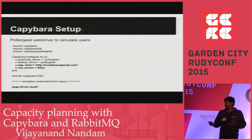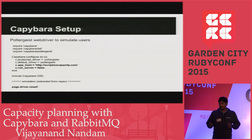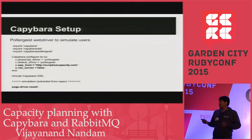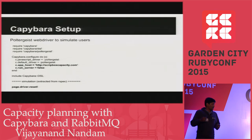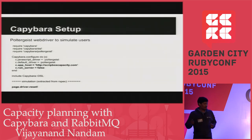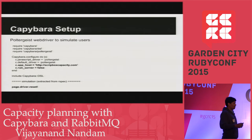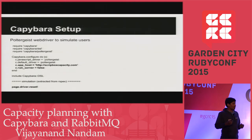We generally use Capybara for acceptance testing, where it runs on a local rack server booted by Capybara. For capacity planning, we configure it to run on a remote host instead of a local one.